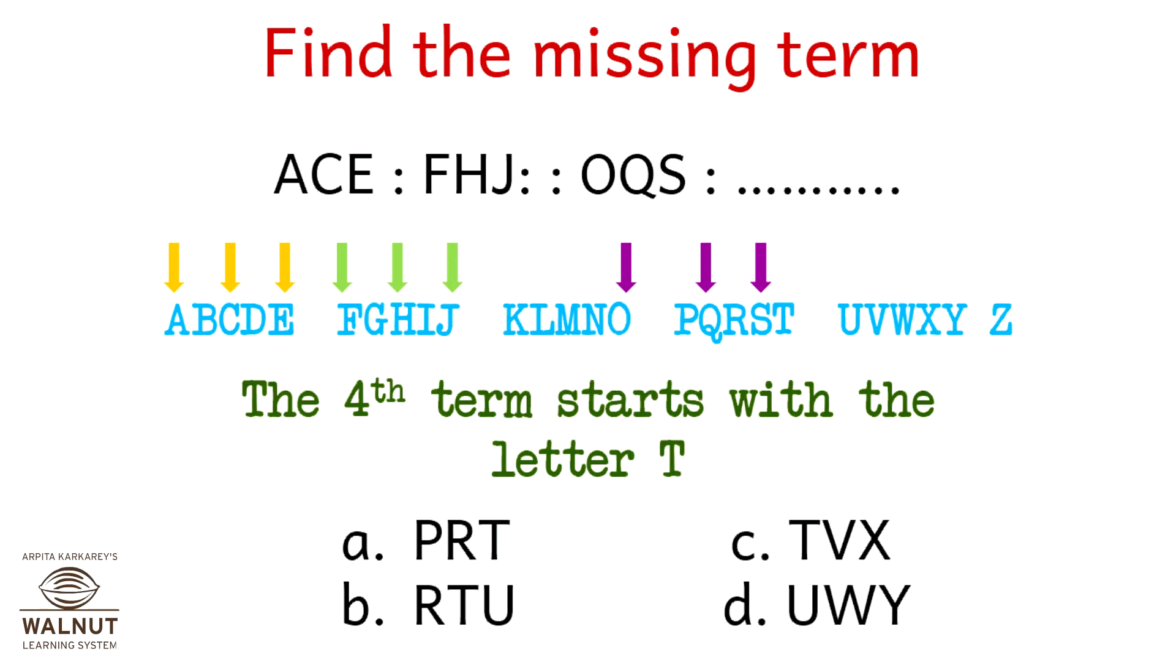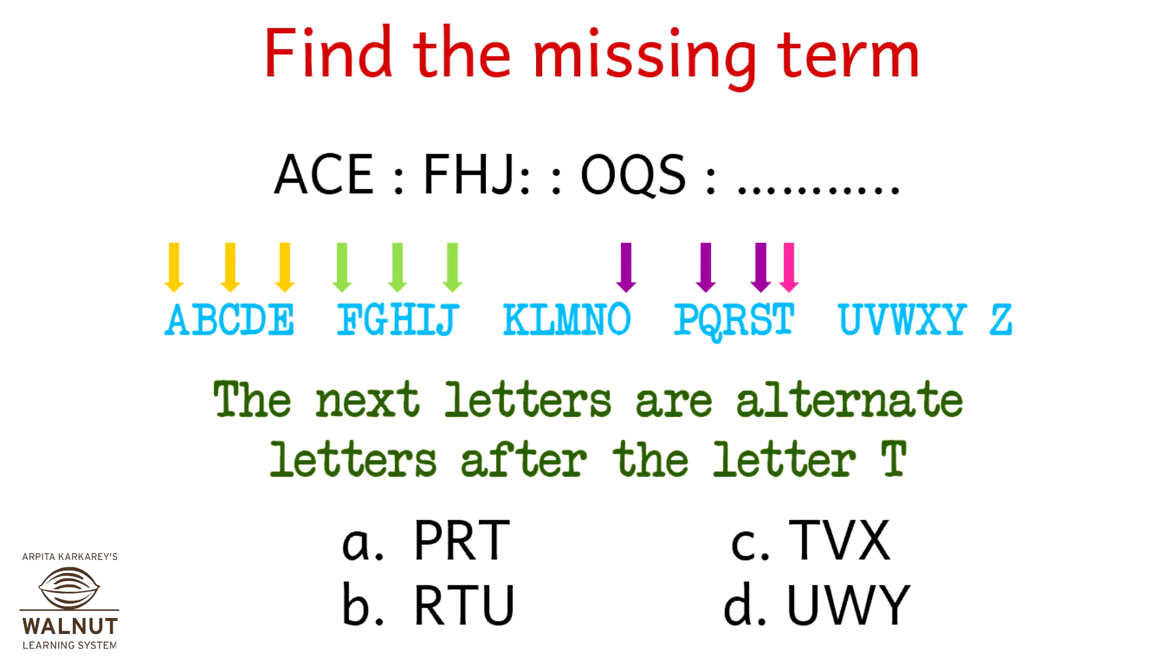So, the fourth term starts with the letter T. And the next letters are alternate letters after the letter T. It's T, V and X. Option C. We have the answer.